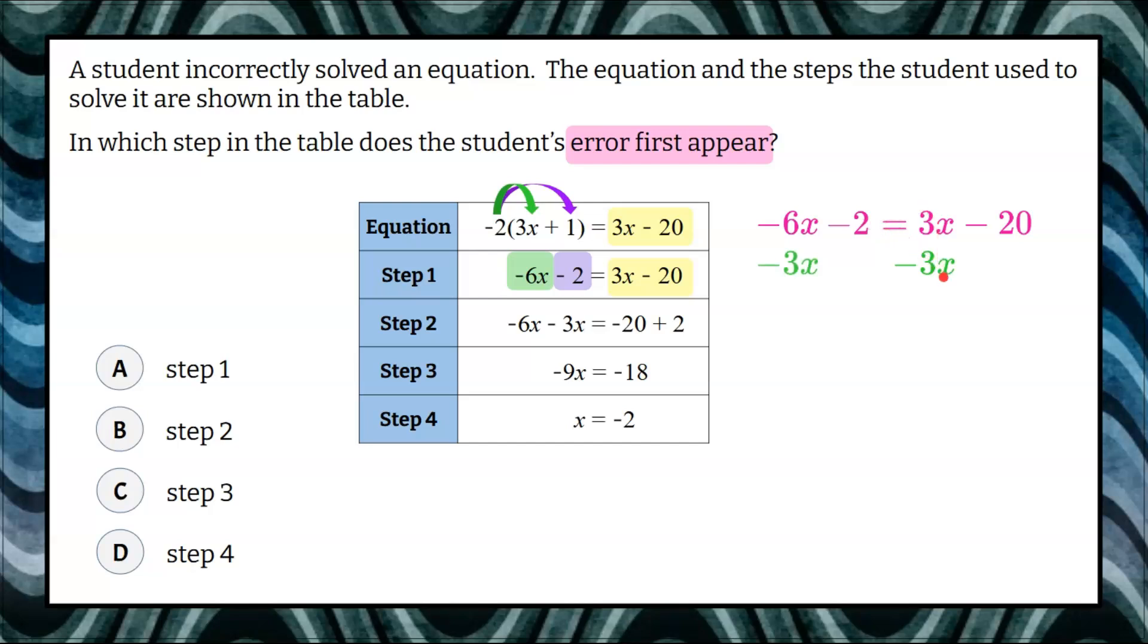What I do to the right side, I must do to the left to keep the balance. And then I want the variable terms on the left by themselves, so I need to do the inverse of subtract 2 to create a 0 pair. So I'm going to add 2, and what I do to one side, I must do to the other.